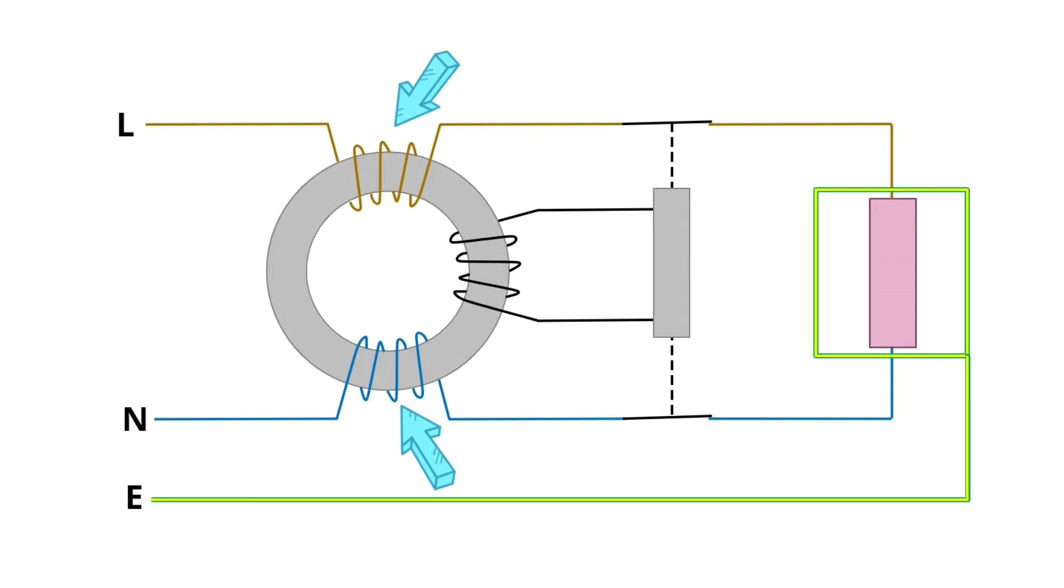Now, at the same time, wrapped around the core, there's this third coil that feeds a tripping device that connects to the switching contacts in the line and neutral connections. Now, when the circuit is healthy, the current passes through the line, and the same amount of current comes back down the neutral.